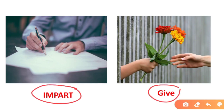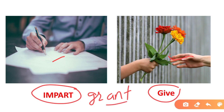For example, the words impart and give — both mean 'to give' — but are used in different contexts. Impart means to pass information, as in 'to impart knowledge.' Give is used more generally, as in 'to give flowers, to give a pen.' Another word, grant, also means 'to give' but is used in the sense of permission, as in 'kindly grant me permission.'